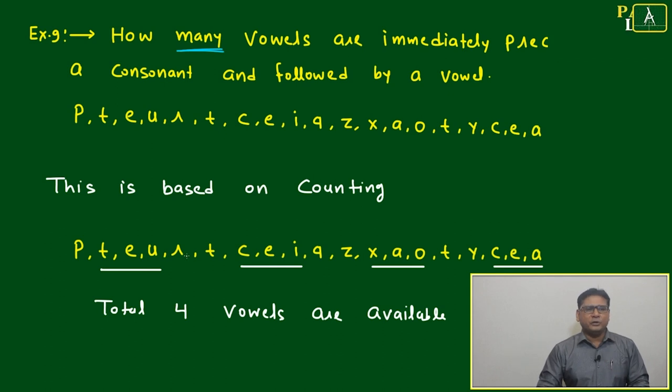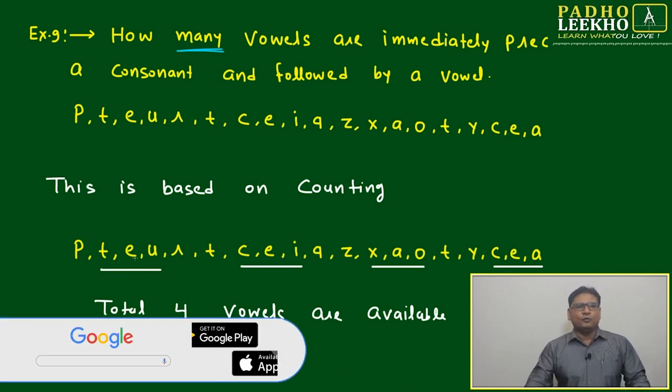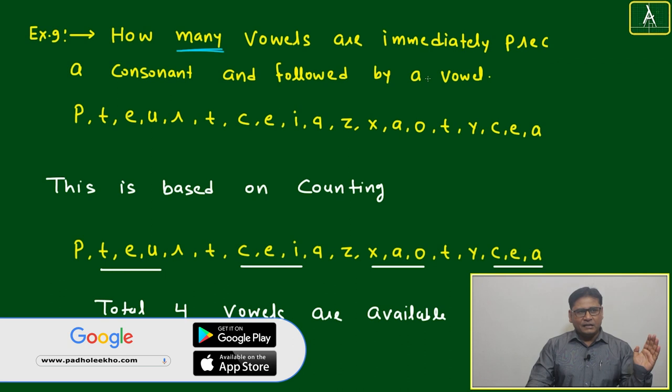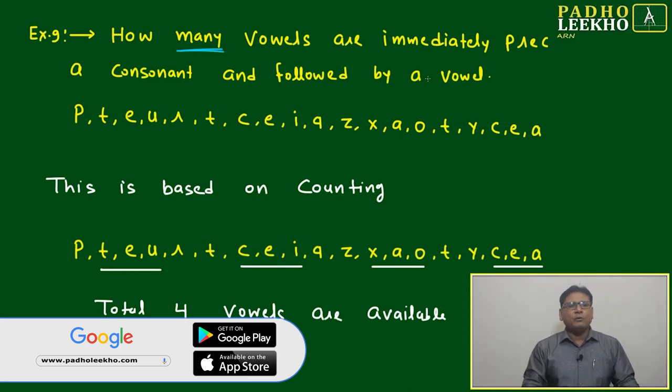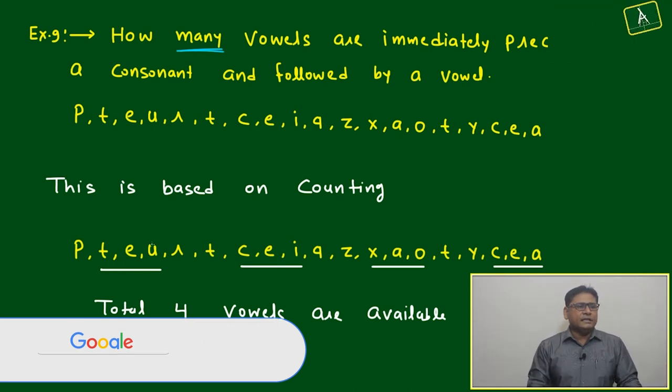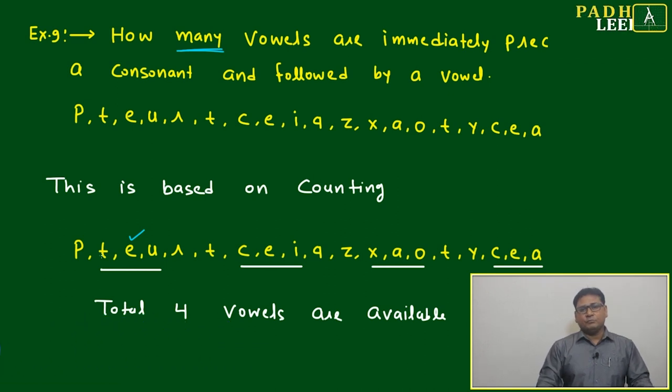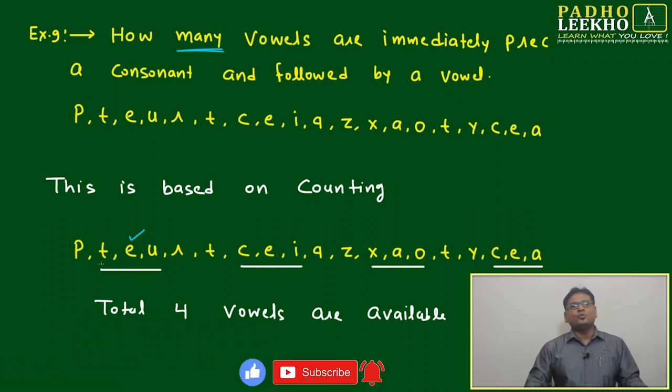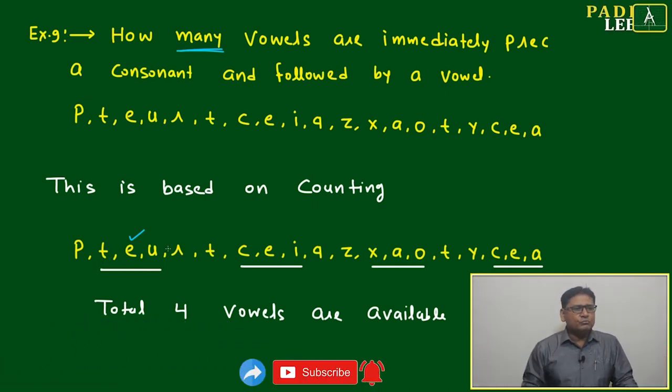We'll figure out how many vowels are following this condition - preceded by a consonant, followed by a vowel. Look at E here. It's perfectly fine: T before, U after. The next U is not followed by a vowel, so this one doesn't count.